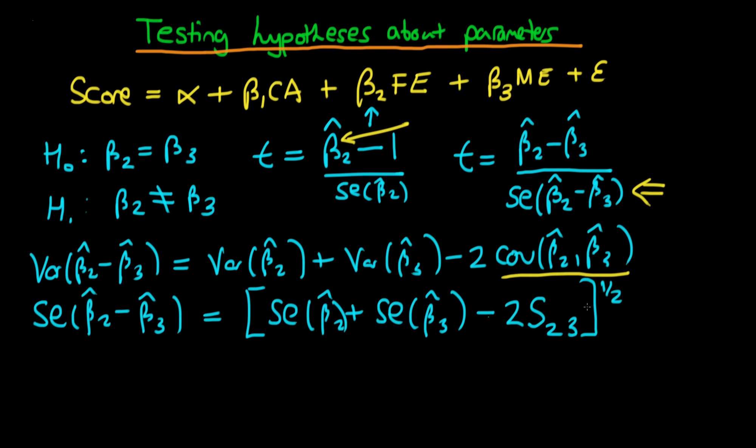In theory, you can get this number from statistical software programs. We get these two standard errors by default, but we have to do a bit of digging to get this particular covariance number.